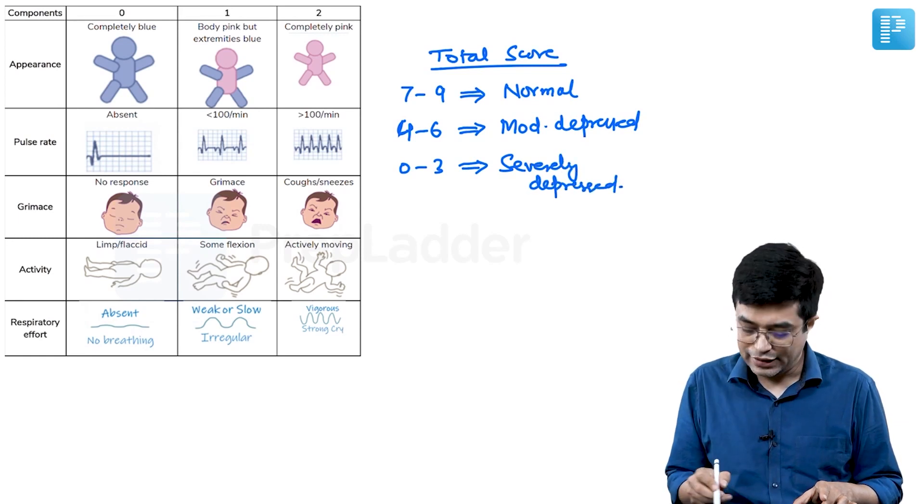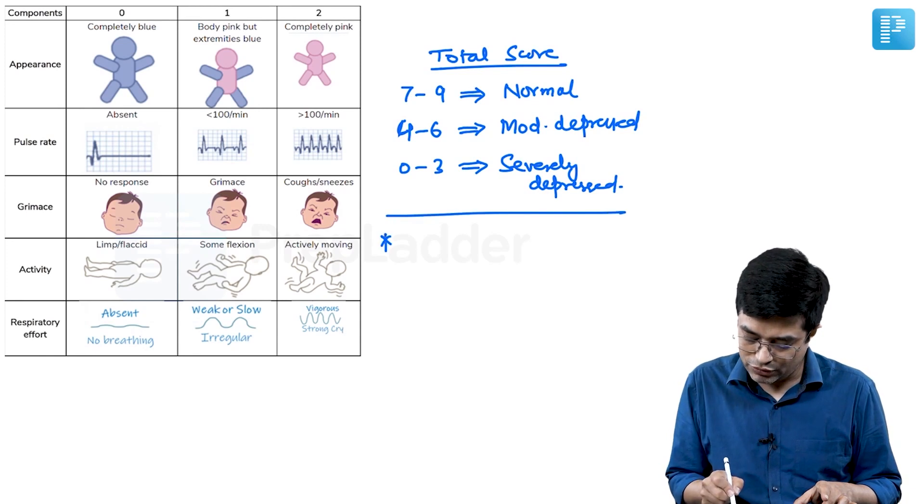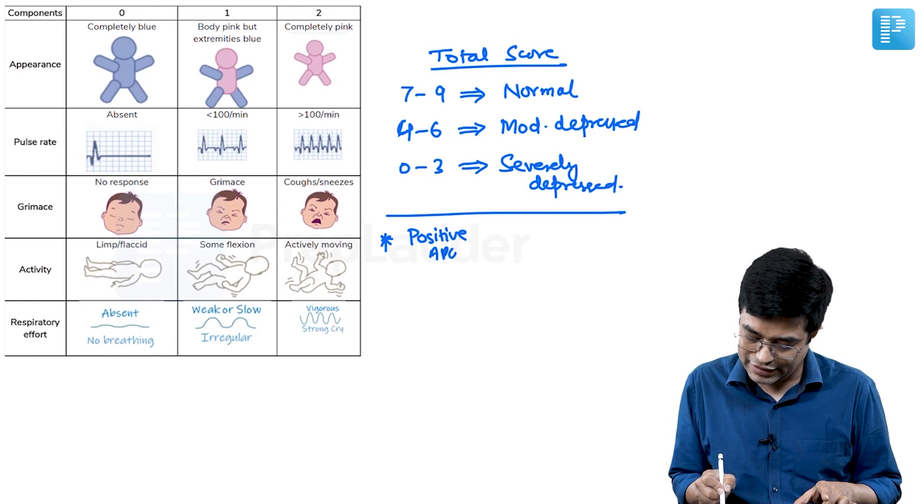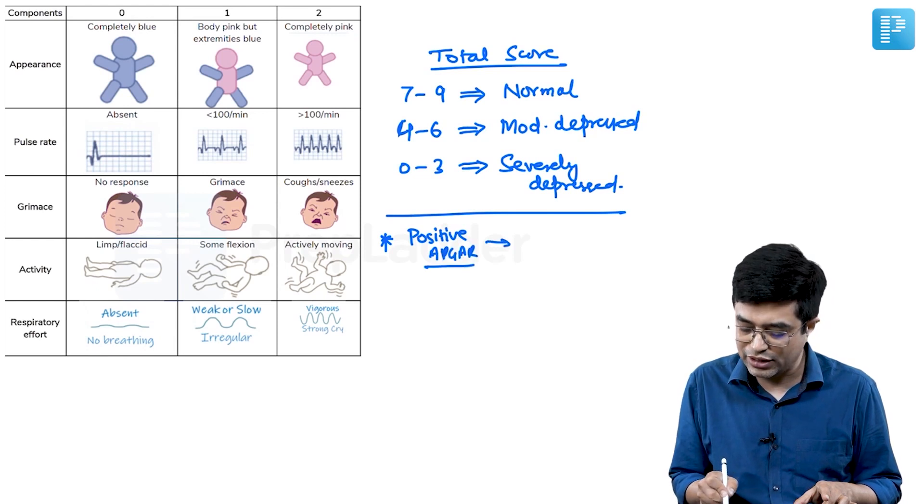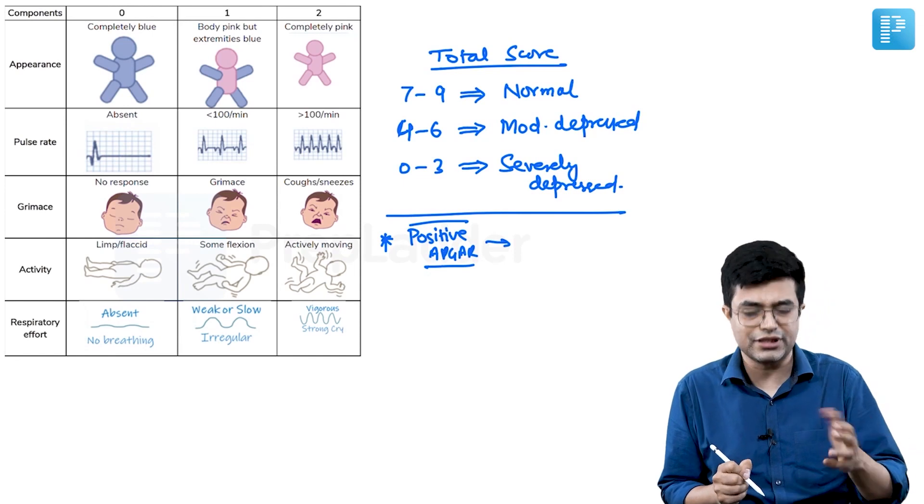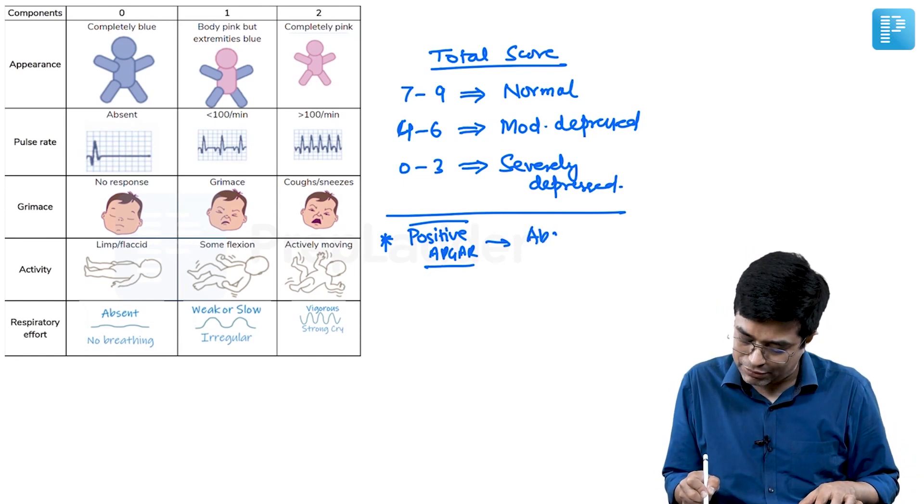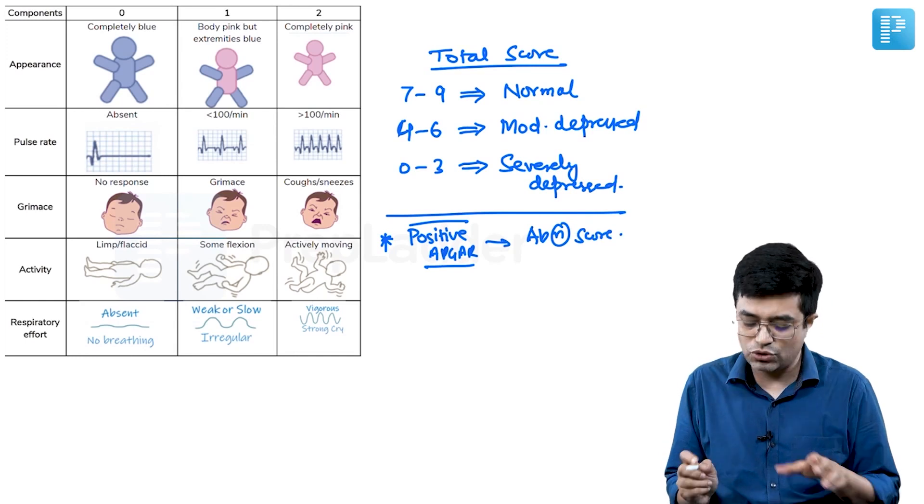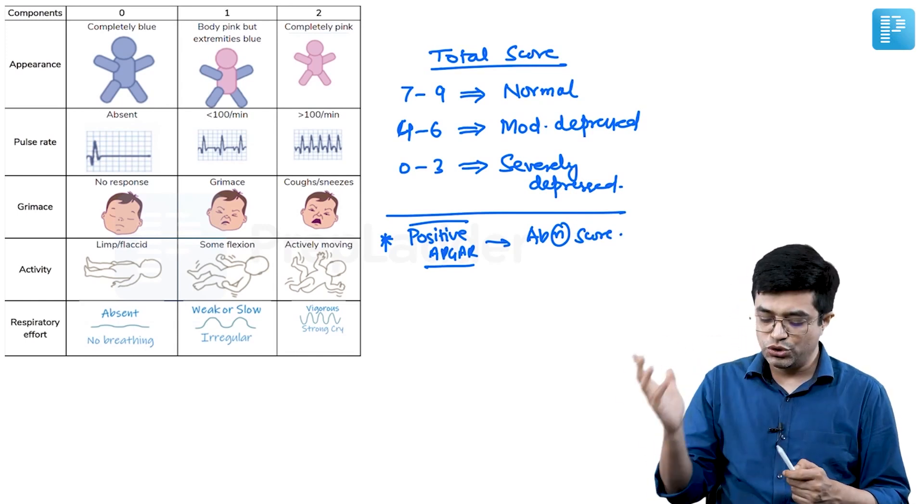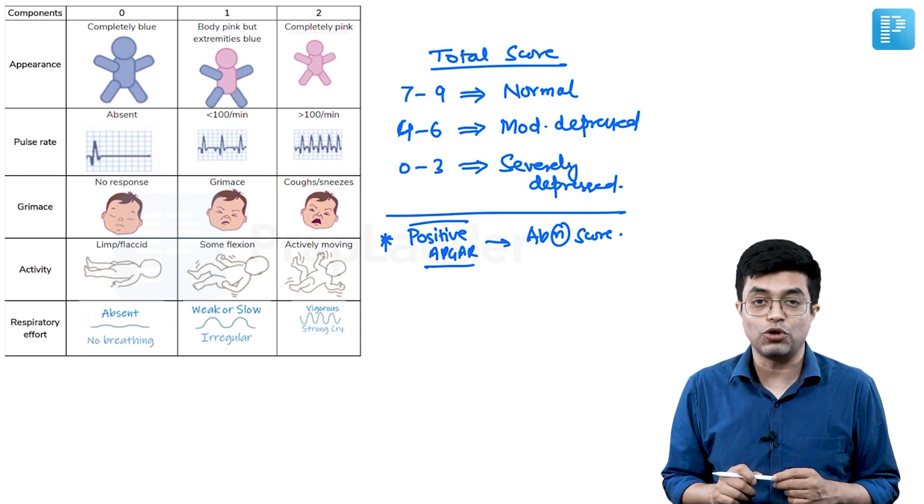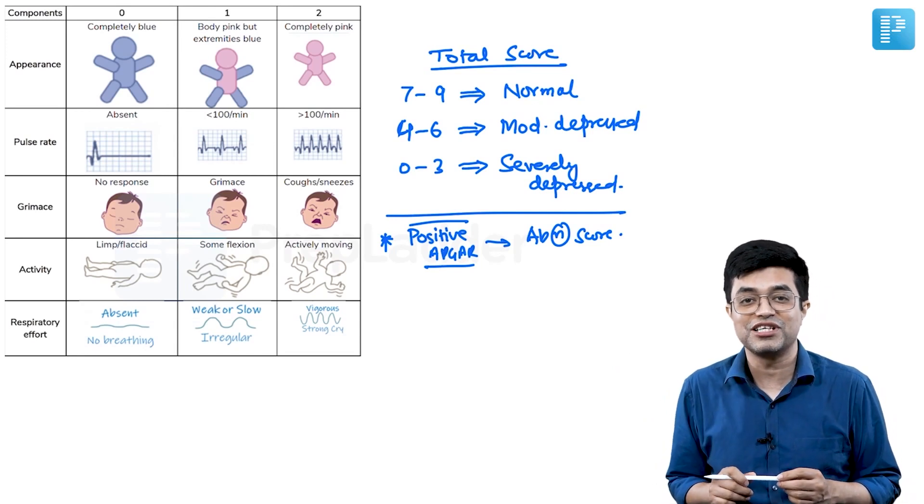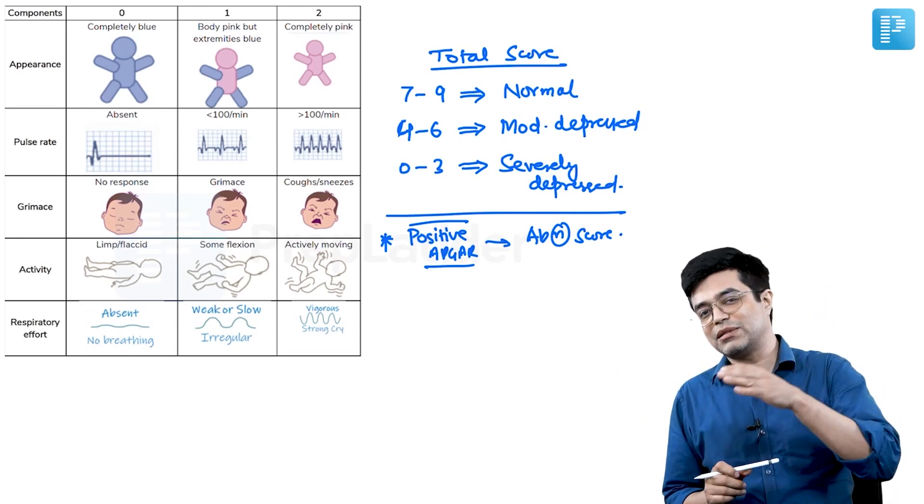There is also a terminology that you need to understand. What is the meaning of a positive APGAR score? Positive APGAR basically means it is not a term which should be used, but still you will find certain institutions, certain textbooks using it. Positive APGAR means an abnormal APGAR score. So any score 6 or below is usually considered to be a positive APGAR. So positive APGAR is actually not positive for the child. It simply shows that there is some abnormality.